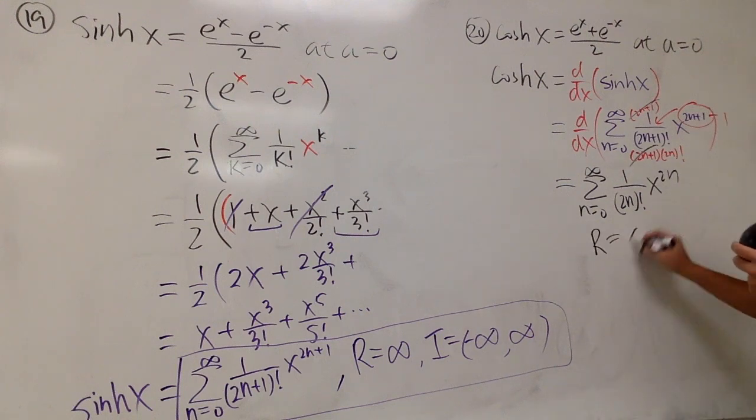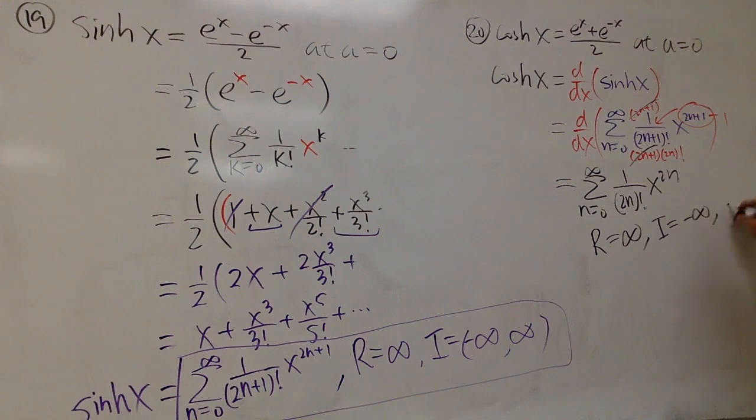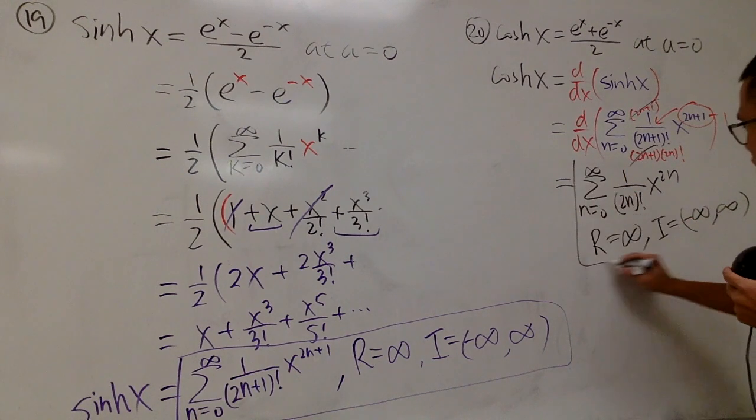And similarly, the r is infinity, the interval is negative infinity to positive infinity, and you can be happy. I can be happy too, because we are done.